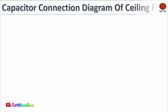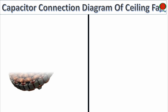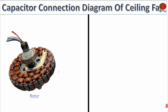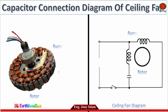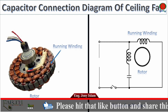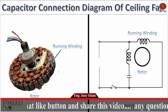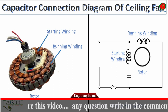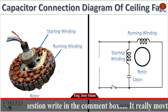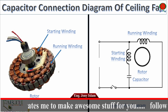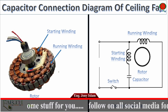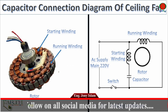Capacitor Connection Diagram of Ceiling Fan. Ceiling Fan Rotor. Ceiling Fan Diagram. Ceiling Fan Running Winding Coil. Ceiling Fan Starting Winding Coil. Ceiling Fan Capacitor: 2.5 Microfarad, 220 Volts. Switch, Fan On/Off, AC Supply Main 220 Voltage.